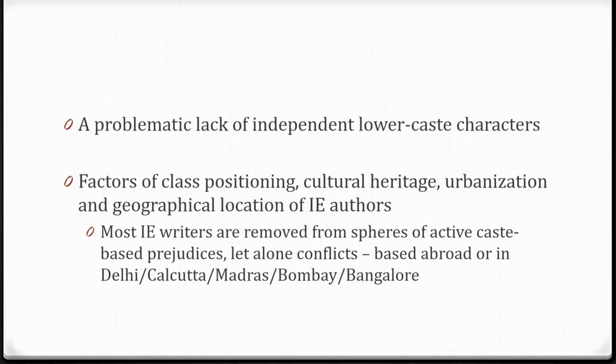Drawing from these examples, Khair is trying to drive home the idea that there is a problematic lack of independent lower caste characters within Indian English fiction. He tries to engage with the many reasons for this and identifies certain factors: class positioning, cultural heritage, urbanization, and the geographical location of Indian English authors, which are surprisingly similar. He reminds us that most Indian English writers are far removed from spheres of active caste-based prejudices, let alone caste conflicts. He refers to most contemporary Indian English authors as being based abroad or in cities like Delhi, Calcutta, Madras, Bombay, and Bangalore.